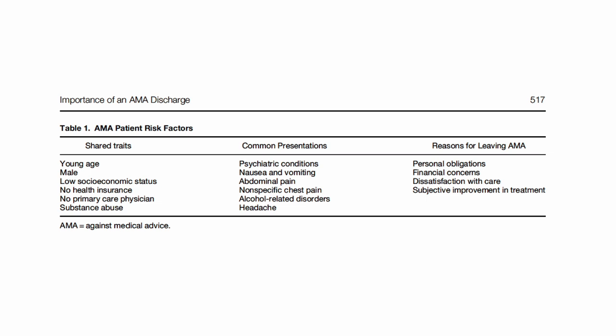You don't know if they're going to be competent or not. The male-to-female distribution skews closer to males, typically lower socioeconomic status, typically with no health insurance, no real primary care physician — not part of the system — and a history of substance misuse. In many cases, they also have some form of abdominal pain, nausea or vomiting, or an alcohol-related disorder. Some reasons they give are personal obligations, financial concerns, and in some cases, dissatisfaction with care.